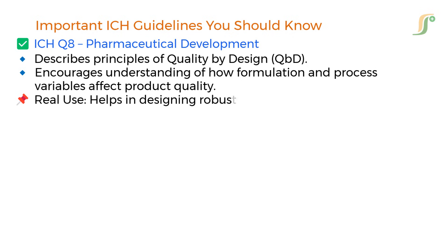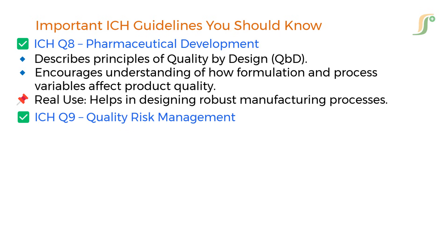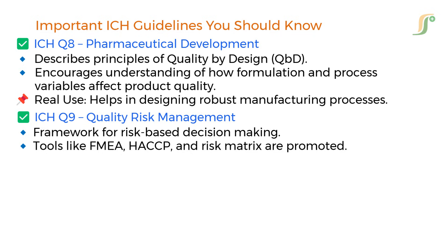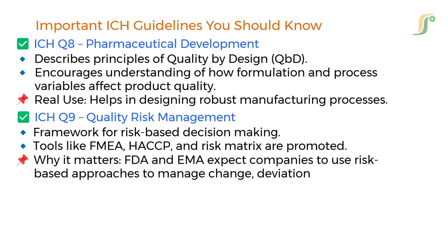ICH Q8 encourages understanding of how formulation and process variables affect product quality. Real use: it helps in designing robust manufacturing processes. ICH Q9 — Quality Risk Management — provides a framework for risk-based decision making. Tools like FMEA, HACCP, and Risk Matrix are promoted. FDA and EMA expect companies to use risk-based approaches to manage change, deviations, and CAPA.